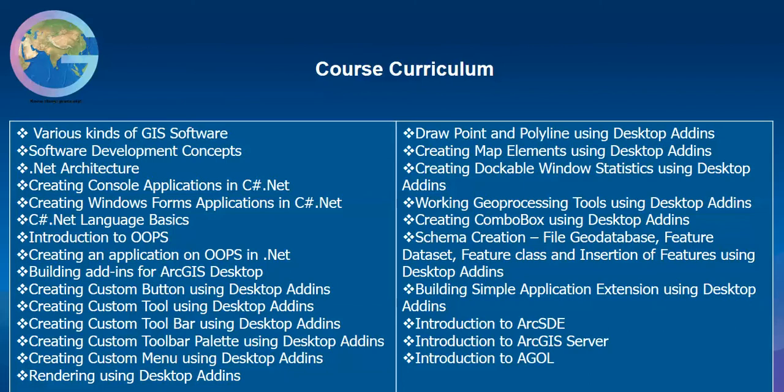We will introduce object-oriented programming concepts and then start building add-ins using ArcGIS Desktop. You will learn how to create different custom buttons, tools, toolbars, toolbar palettes, and menus. You will know how to render using GIS Desktop, how to create points, lines, and polygons, how to create a schema and insert map elements into the page layout, how to prepare a dockable window, different kinds of geoprocessing tools, how to work with combo boxes, and how to create an extension.